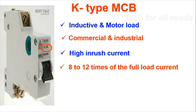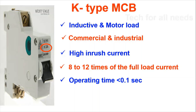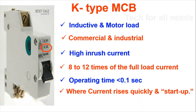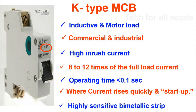The operating time for K type is 0.1 seconds. Current is characterized by a sudden rise or quick rise at startup. K type MCB uses a highly sensitive bimetallic strip.